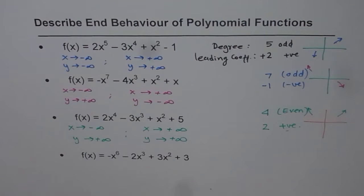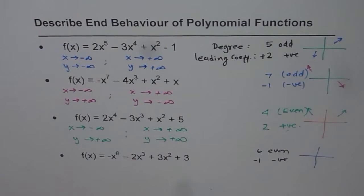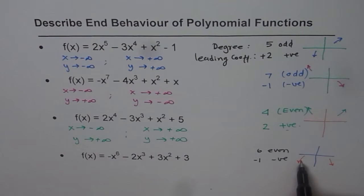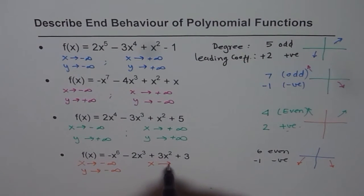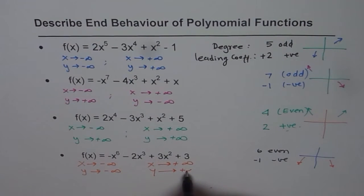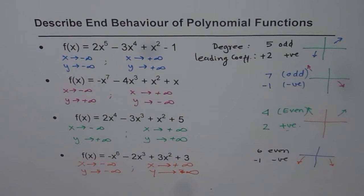The last one is also an even-degree polynomial. The degree is 6, which is even, and the leading coefficient is -1, which is negative. Negative means right side down, and even degree means both sides face in the same direction — so both are down. As x approaches negative infinity, y approaches negative infinity, and as x approaches positive infinity, y also approaches negative infinity.